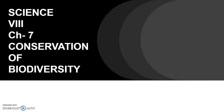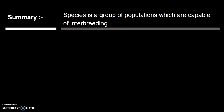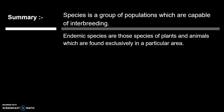Here we continue our chapter on conservation of biodiversity. Before starting today's session, let's have a quick recap on the previous content. We studied that a species is a group of populations capable of interbreeding. There are endemic species, which are those species of plants and animals found exclusively in a particular area.